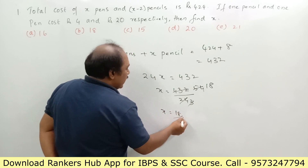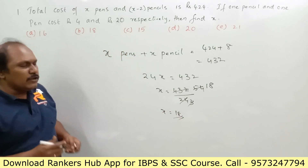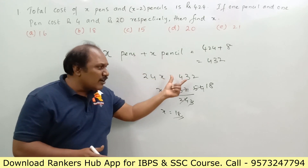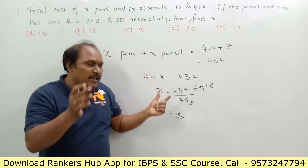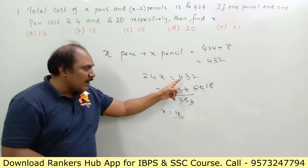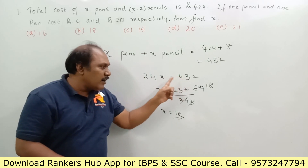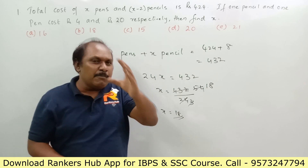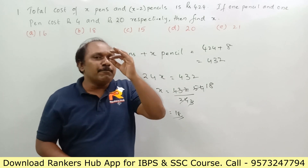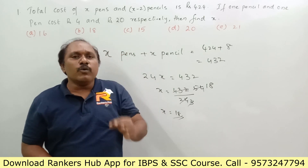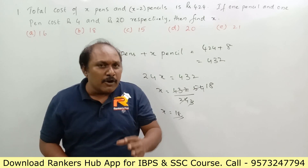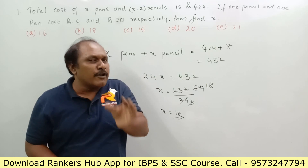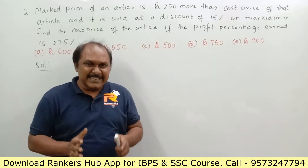So x is equal to 18. This is how you need to think to answer this question. All these calculations done orally give you directly 432 divided by 24. Remember, how quickly you solve a problem is important — try to avoid formulas and solve mentally as much as possible.